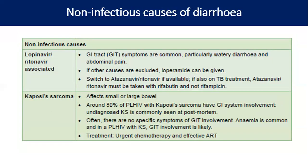Lopinavir/ritonavir is also associated with diarrhea. In such cases, we can use loperamide if confident it is due to the drug and not gastroenteritis, or we can switch lopinavir/ritonavir to atazanavir/ritonavir. If the patient is concurrently on TB treatment, we must modify the anti-TB treatment with rifabutin instead of rifampicin, because of drug interaction between atazanavir and rifampicin — rifampicin will render ART ineffective and may lead to resistance.